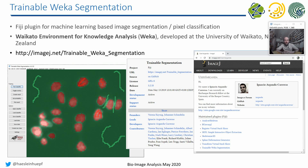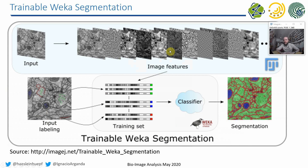There is a website where you can read more details, and it will tell you very similar things. You take your original input image and derive different image features — different blurred images, edge images — applying different filters to your input image. Then you take these features for every individual pixel and train a classifier, or apply a classifier, to make a segmentation, a pixel classification.